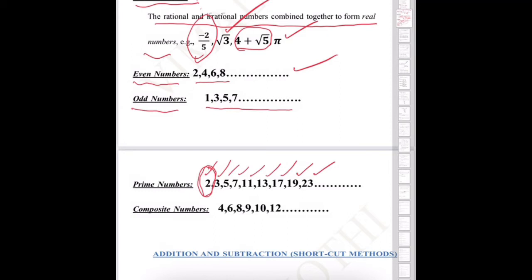Composite numbers: these are numbers that can be divided. For example, 4 equals 2 times 2; 6 equals 2 times 3; 8 equals 2 times 4; 9 is divisible by 3; 10 equals 2 times 5. These are all composite numbers.